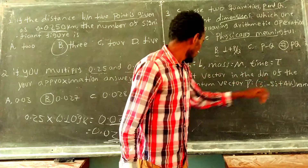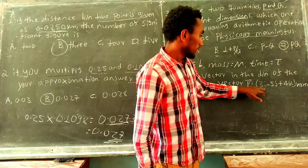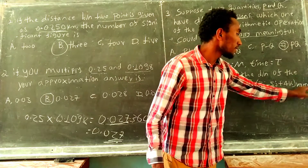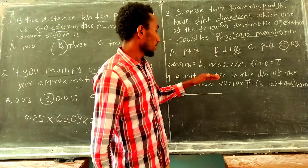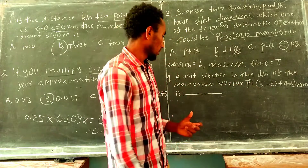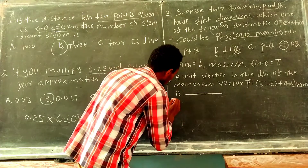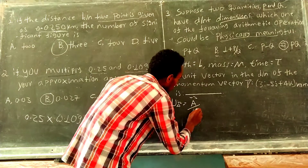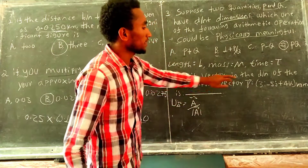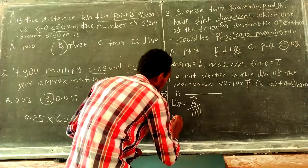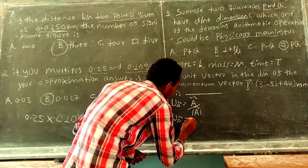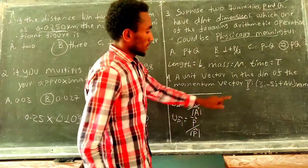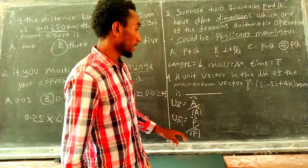Find a unit vector in the direction of the momentum vector P, which is 3 in the i-direction, minus 5 in the j-direction, plus 4 in the k-direction, with units of kilogram meter per second. The unit vector is equal to the vector divided by the magnitude of the vector. So first we have to find the magnitude.